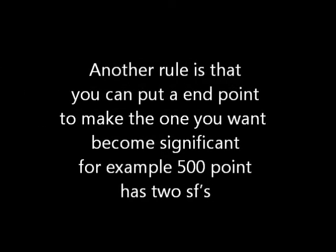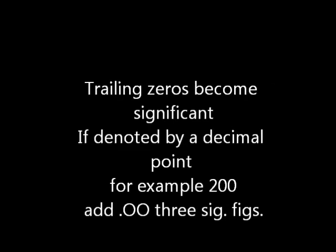Another rule is that you can put an end point to make the one you want become significant. For example, 500. (with a decimal point) has 2 significant figures. Trailing zeros become significant if denoted by a decimal point.